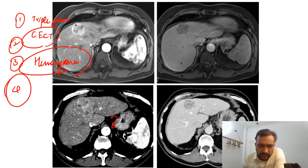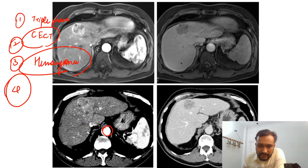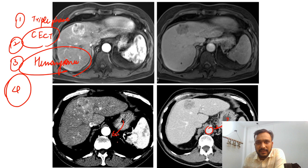In this image we have an arterial phase CCT abdomen scan. How do we say it is an arterial phase scan? Because if we look at the abdominal aorta, it is appearing bright as compared to the IVC. And in the portal venous phase, the aorta is not appearing as bright as it was in the arterial phase.